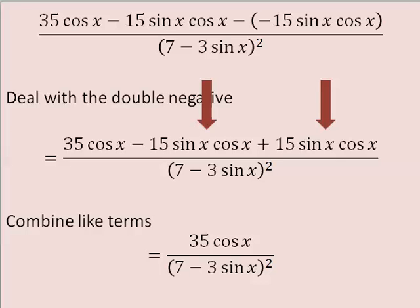And I'm left with 35 cosine x in the numerator. Notice that I have done nothing with the denominator. That is on purpose. Leave the denominator alone.